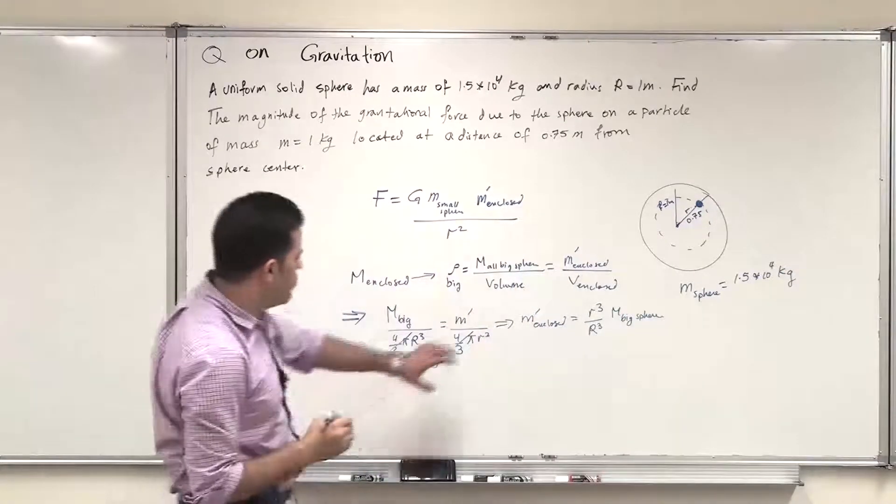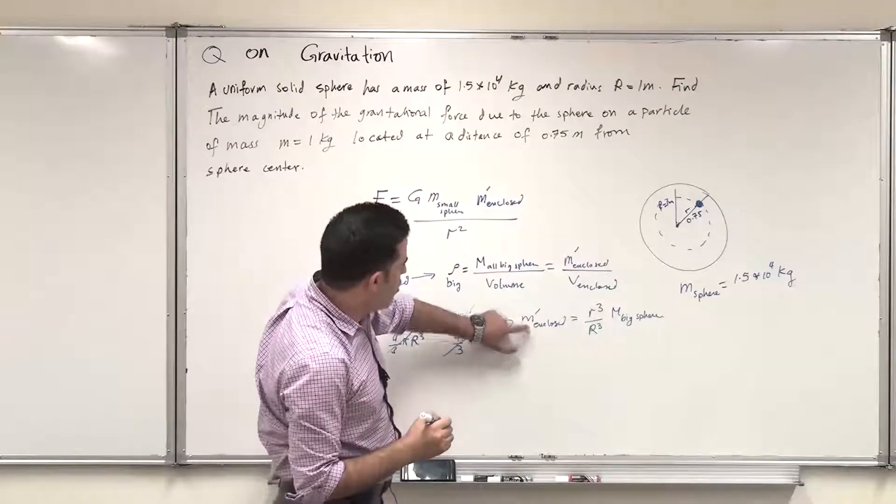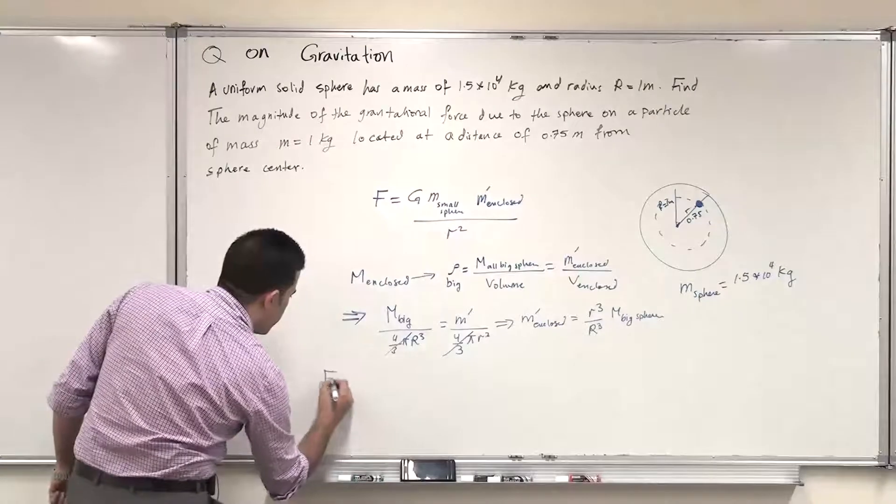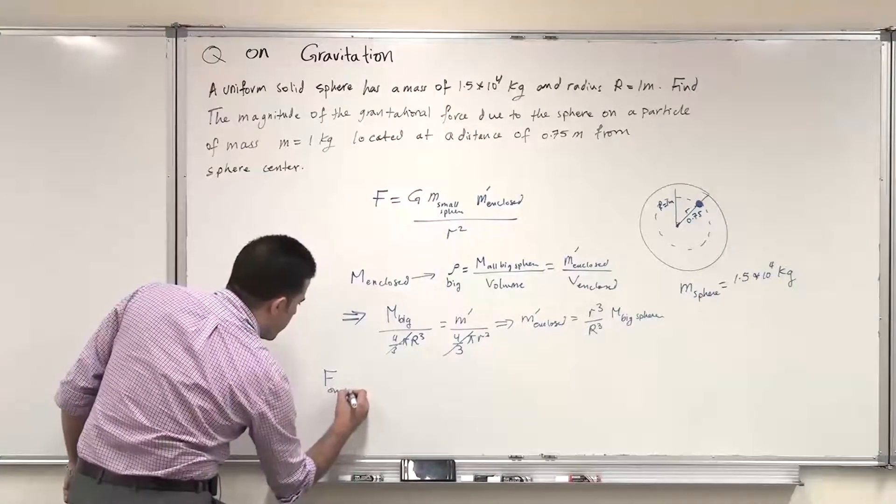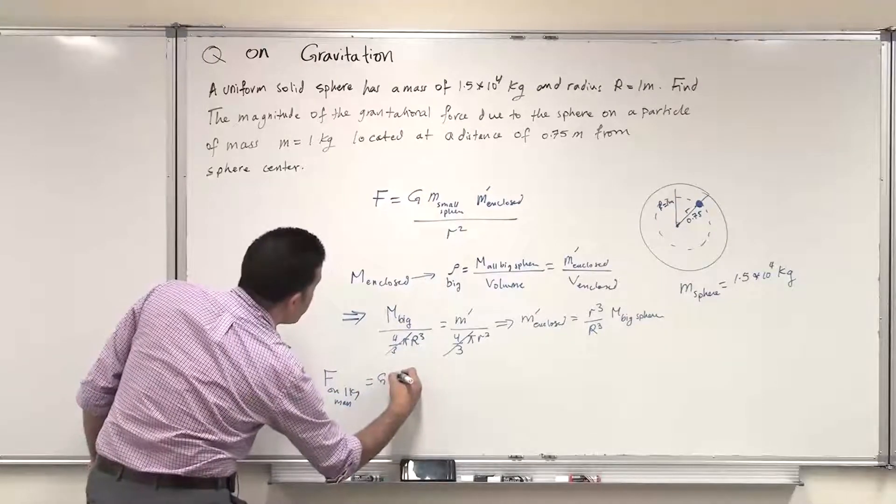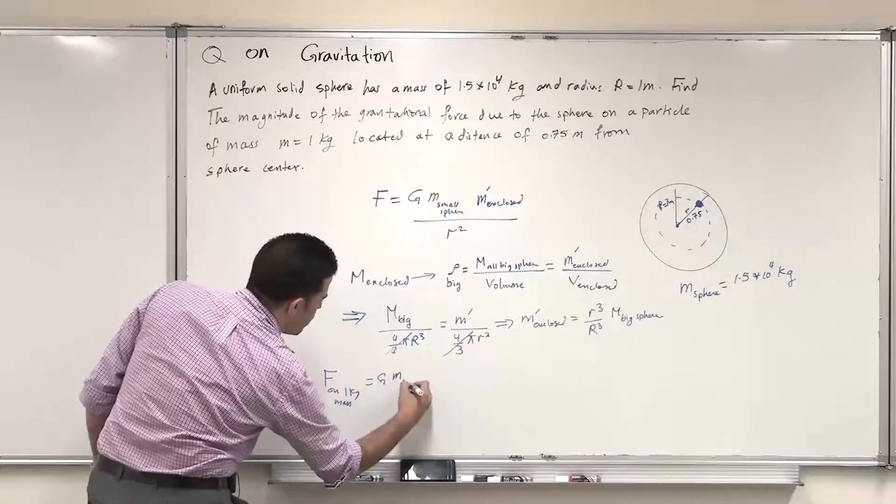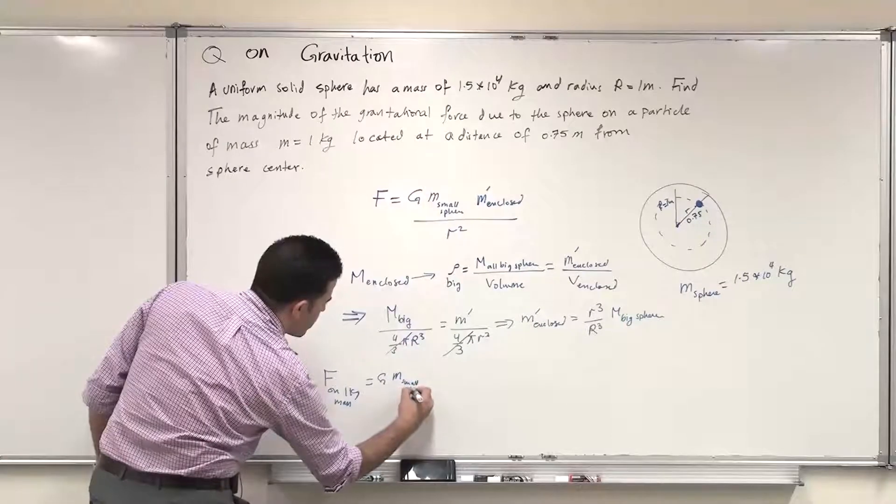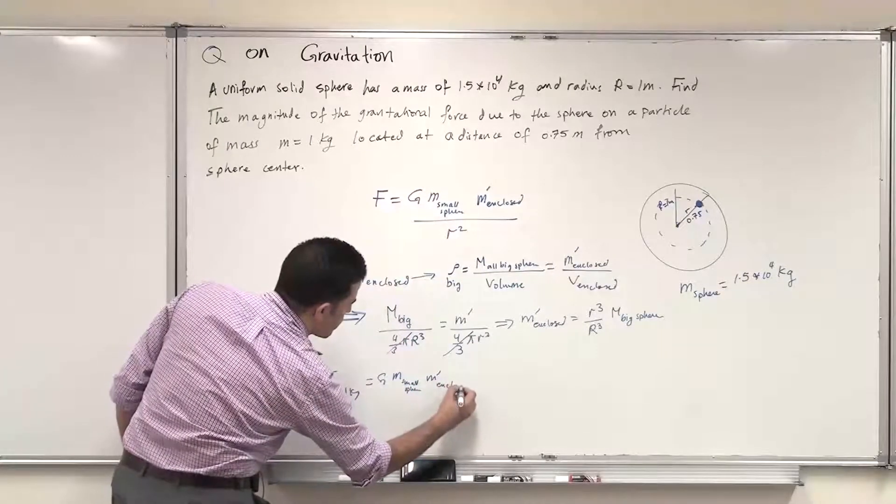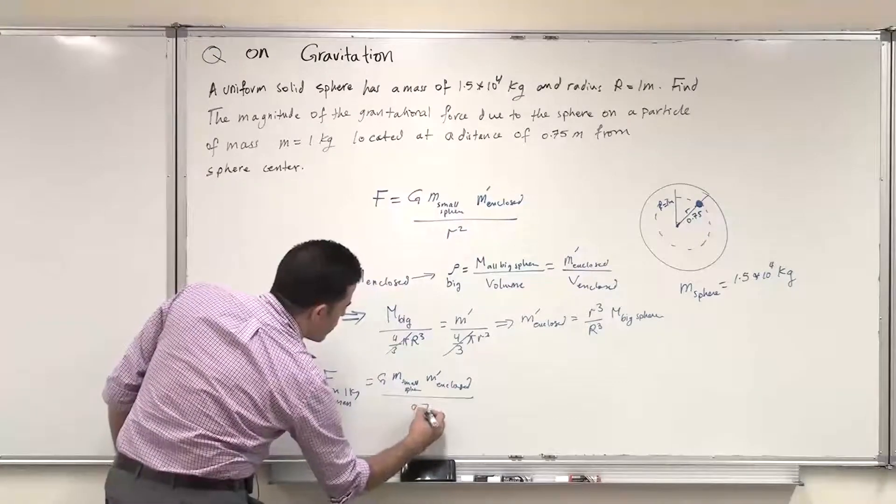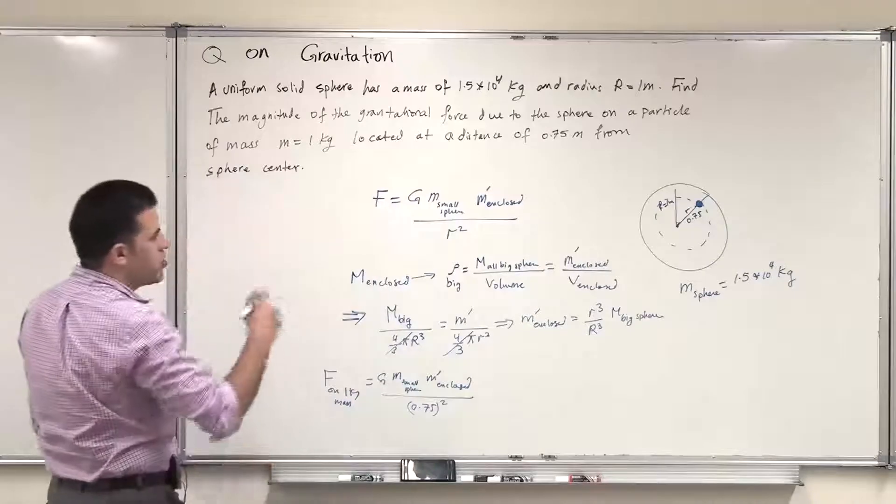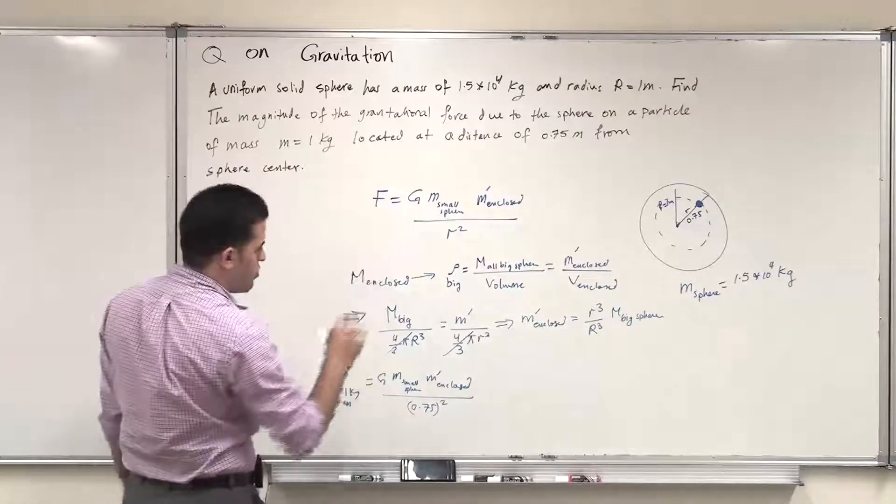So now we can substitute this mass enclosed in the main equation to get the force. So force on 1 kilogram mass should equal G times m small sphere, times m prime enclosed, over 0.75 squared, the square of the distance to the small sphere.